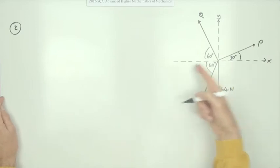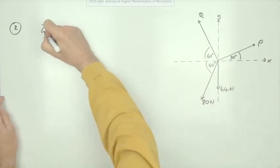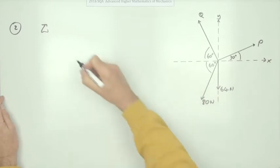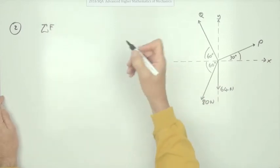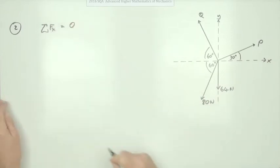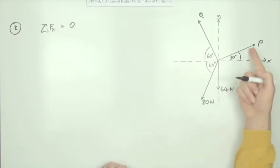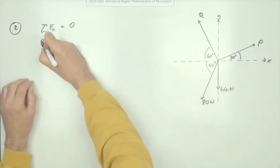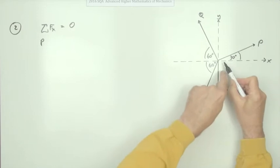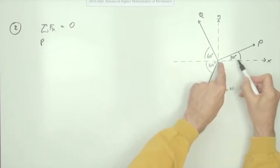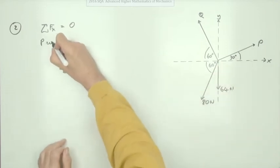Take direction X. There's no net movement, there's no translation in direction X, so the net force in direction X must be zero. Now what's happening that way? Well, P is going that way. Not all of it, just this portion here of it, adjacent to the 30s, that's cos 30 degrees.